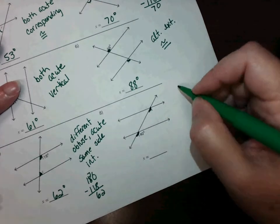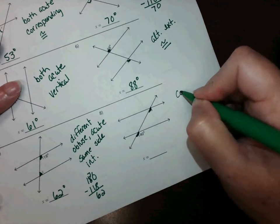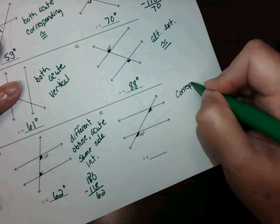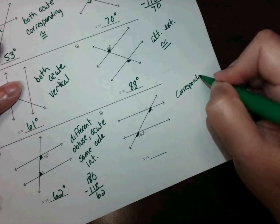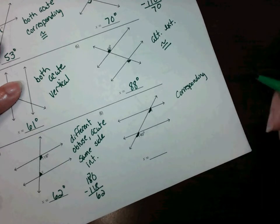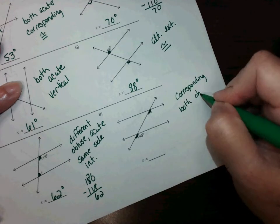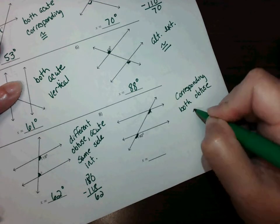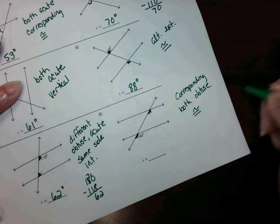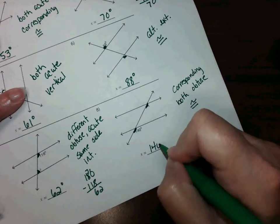We've got 140 and this value right here — these are corresponding angles. They're also both obtuse, so they are congruent. If one is 140, so is the other.